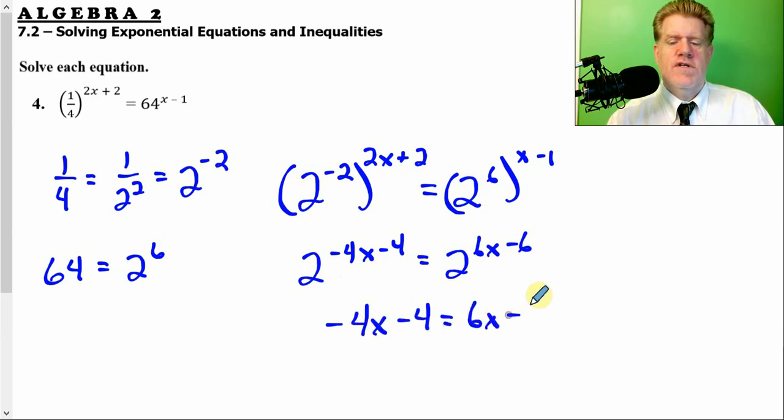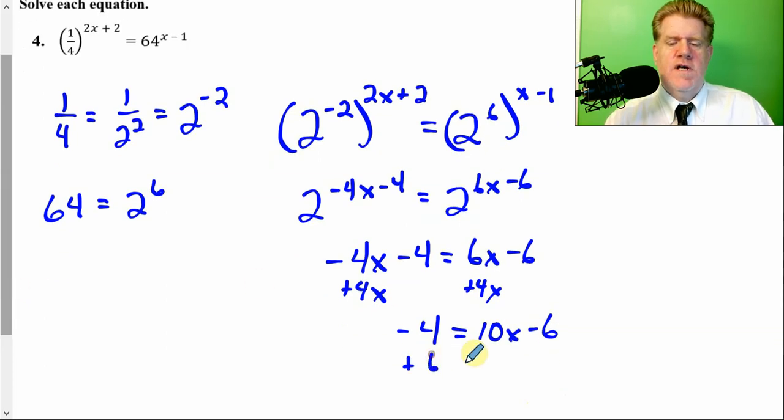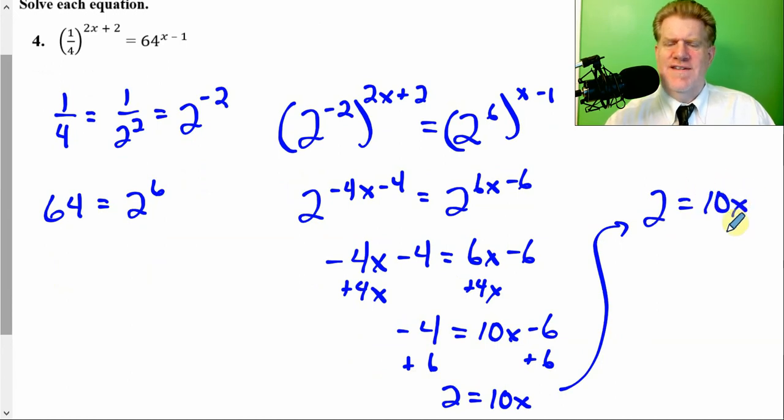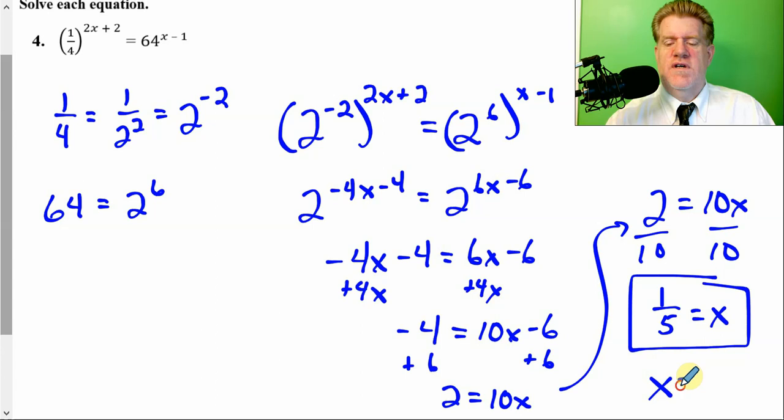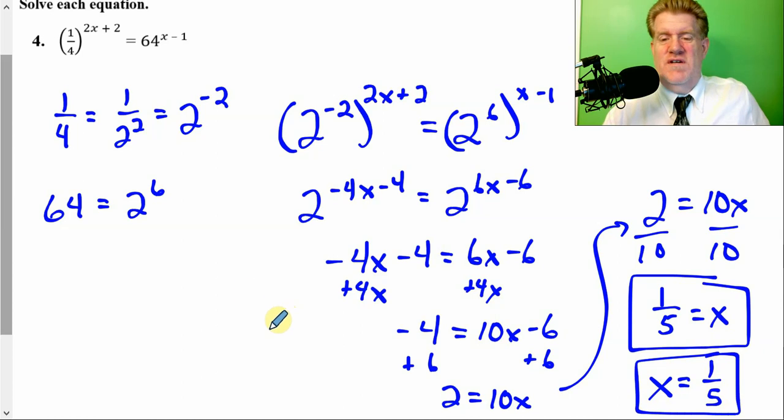So, we can just set those equal to each other. Add 4x. So, negative 4 equals 10x minus 6. Add 6 to both sides. What do we end up with? 2 equals 10x. Let's bring that up here. 2 equals 10x. Divide by 10. x equals 1 fifth. Or, if you want to write it this way, I usually write the x first. But, when it equals each other, it really doesn't matter. They mean the same thing. And, I don't care which one you put. But, that's how you solve equations. Make sure the base is the same. And, go.